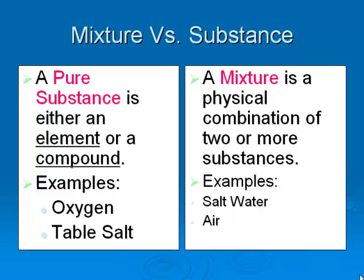Matter is divided into two basic categories: either pure substances or mixtures. Write that down in your notes — pure substances or mixtures. A pure substance is an element or a compound. A mixture is just a physical combination of two or more pure substances. For example, salt water would be a mixture — it has salt and water mixed together.